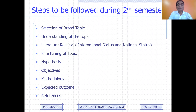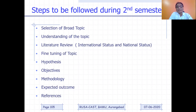As I told you how to do the literature review — and again I will give you the example of international and national status — after literature review, that would be fine-tuning of the topic. You have a broad topic, then fine-tune it, and then you will be able to formulate a hypothesis, set of objectives, methodology, and expected outcome and references.